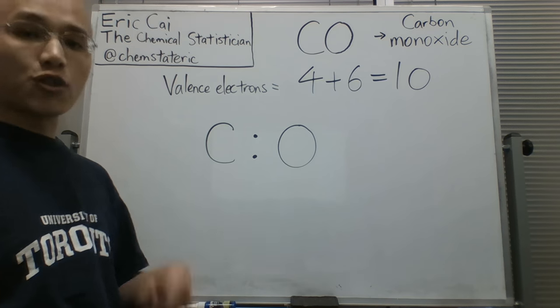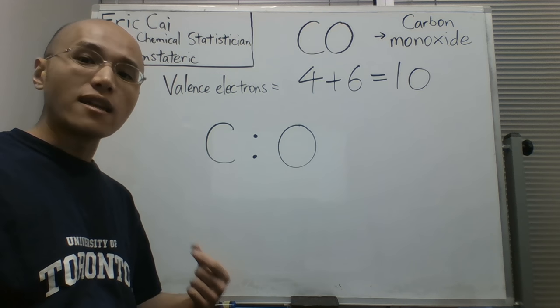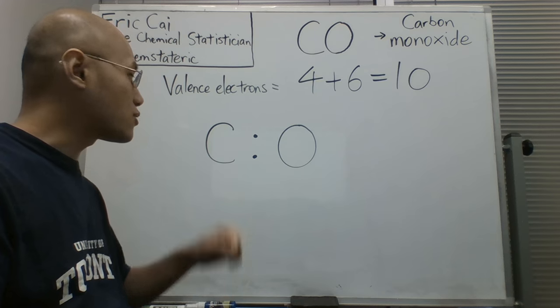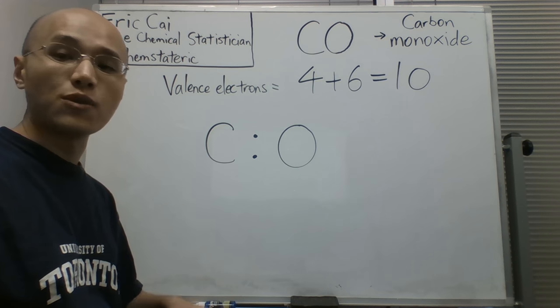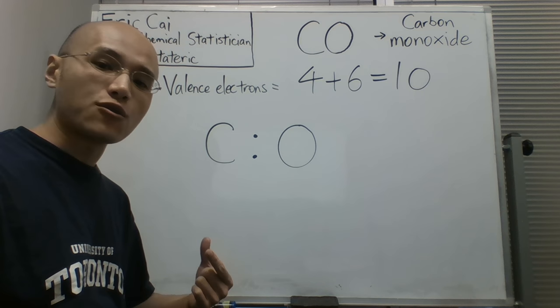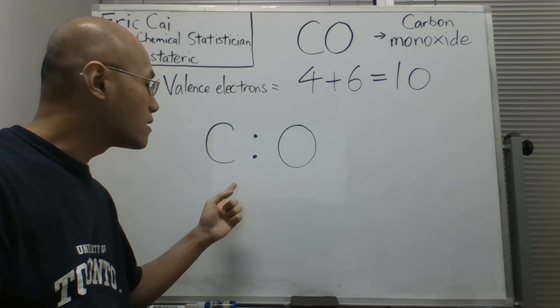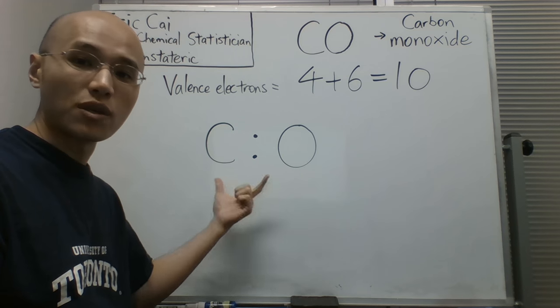That takes away two electrons from that count of 10, so there are eight electrons left to be divided between the two constituent atoms. It would be a good starting point to assume that the number of electrons to be divided is the same between the two atoms.